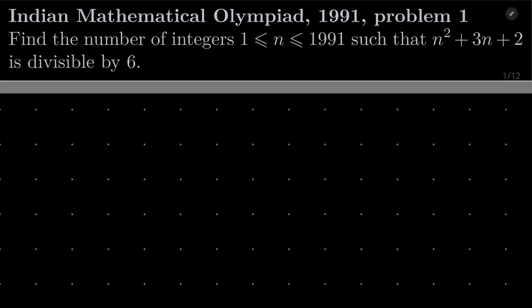Hello friends, in this video I'd like to solve the following problem from the Indian Mathematical Olympiad 1991, problem number 1. We wish to find the number of integers between 1 and 1991 such that n² + 3n + 2 is divisible by 6.